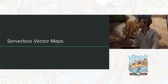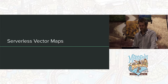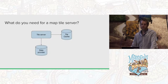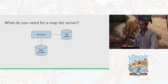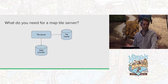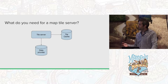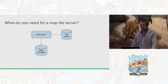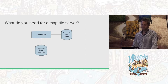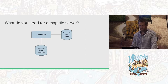Let's get into serverless vector maps. When you look at building a vector tile server, you have three core components: the tile server, a tile cache, and a data provider. You don't necessarily need a tile cache but it's usually a good idea. The data provider could be a whole bunch of different things — a PostGIS database, shape files, or various other data sources.